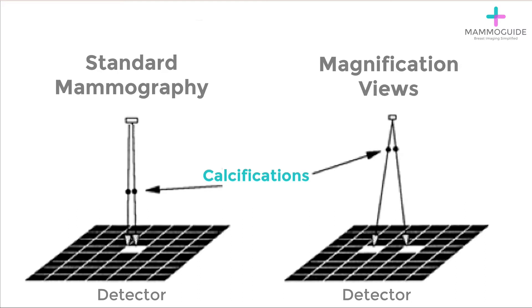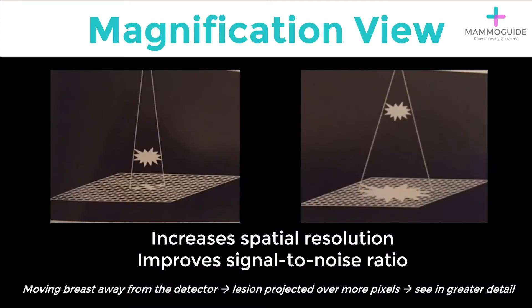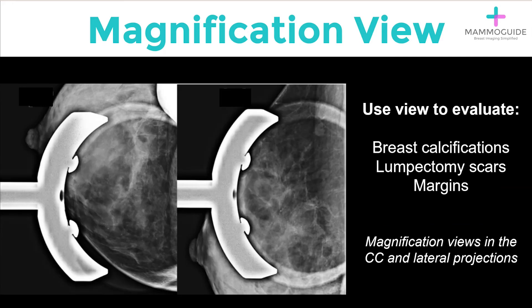This allows the abnormality to be spread out over a greater number of pixels, leading to increased detail. This increases the spatial resolution and also improves signal-to-noise ratio. Moving the breast away from the detector, the lesion projects over more pixels — you can see it in greater detail. Magnification views are used primarily to evaluate breast calcifications.